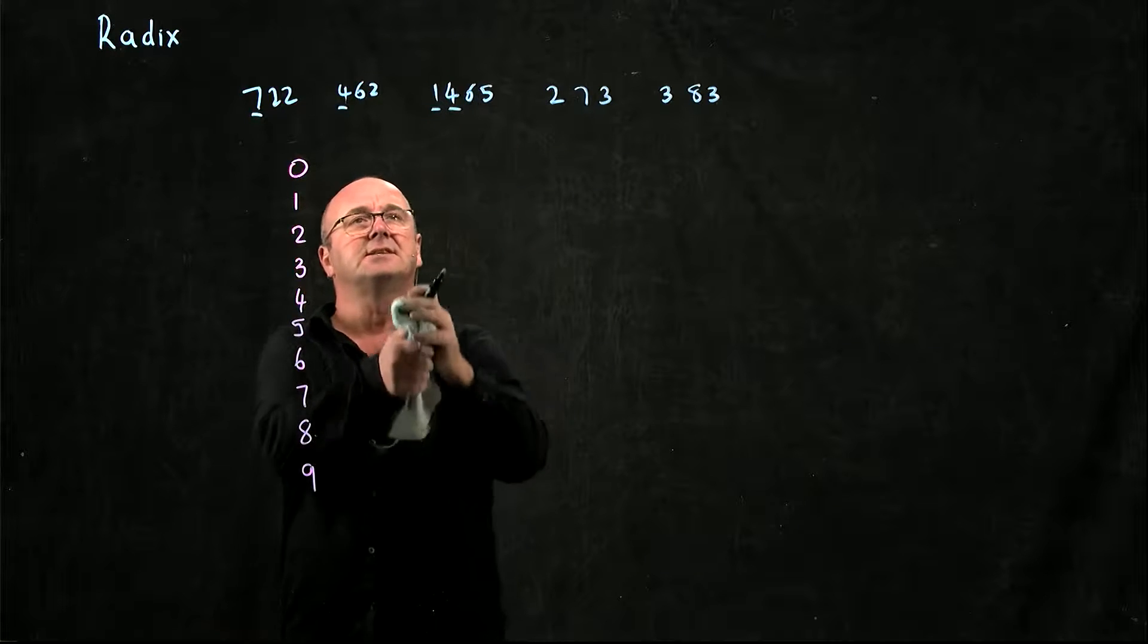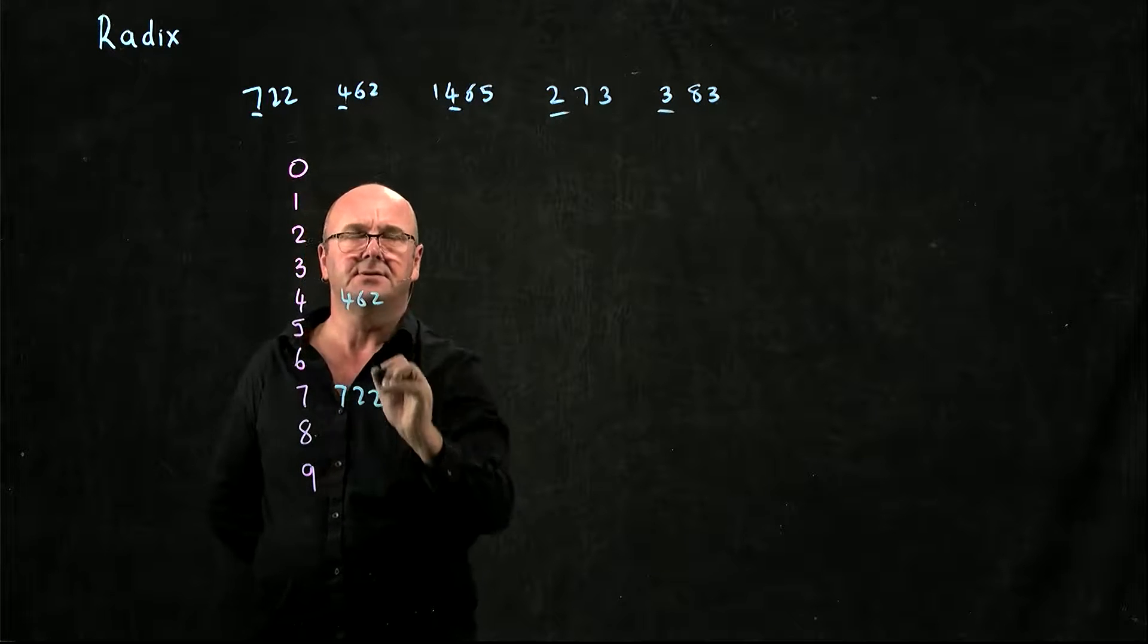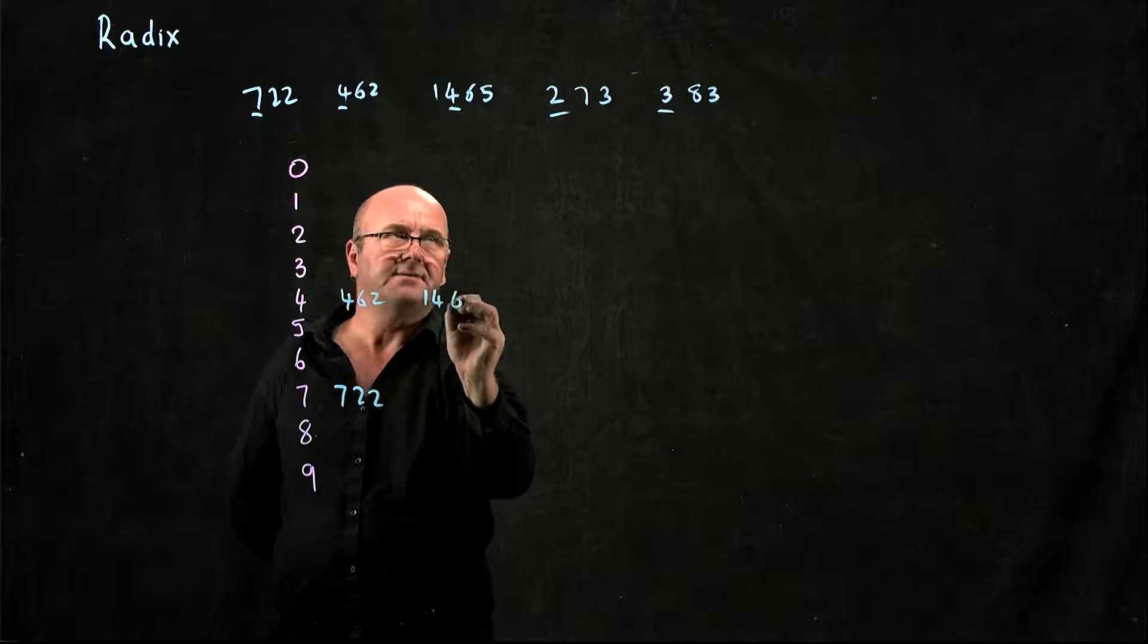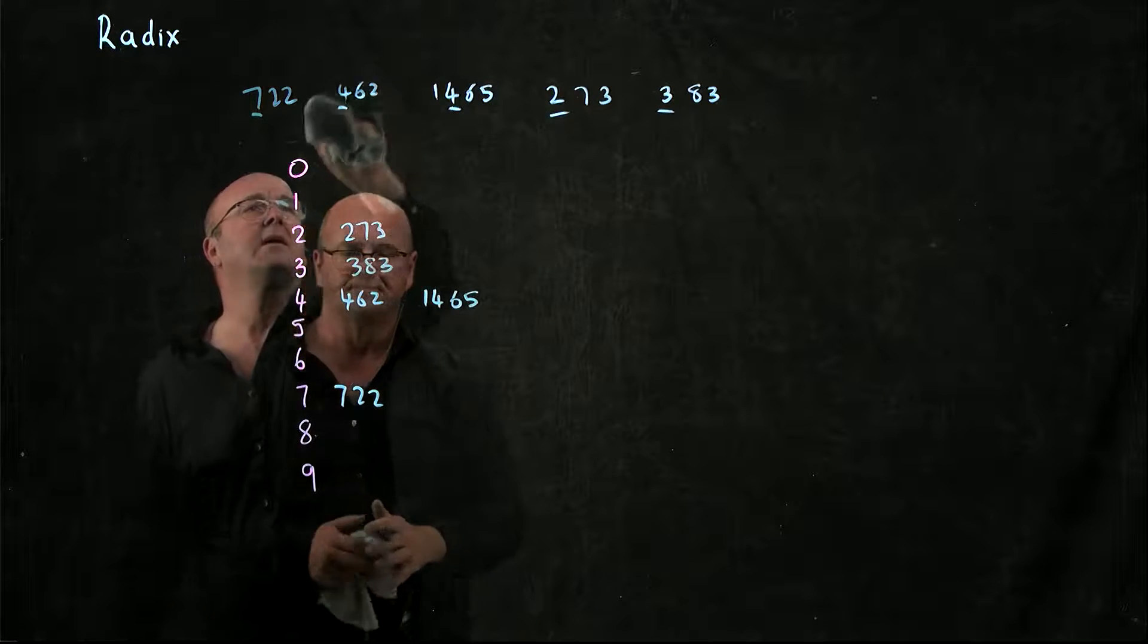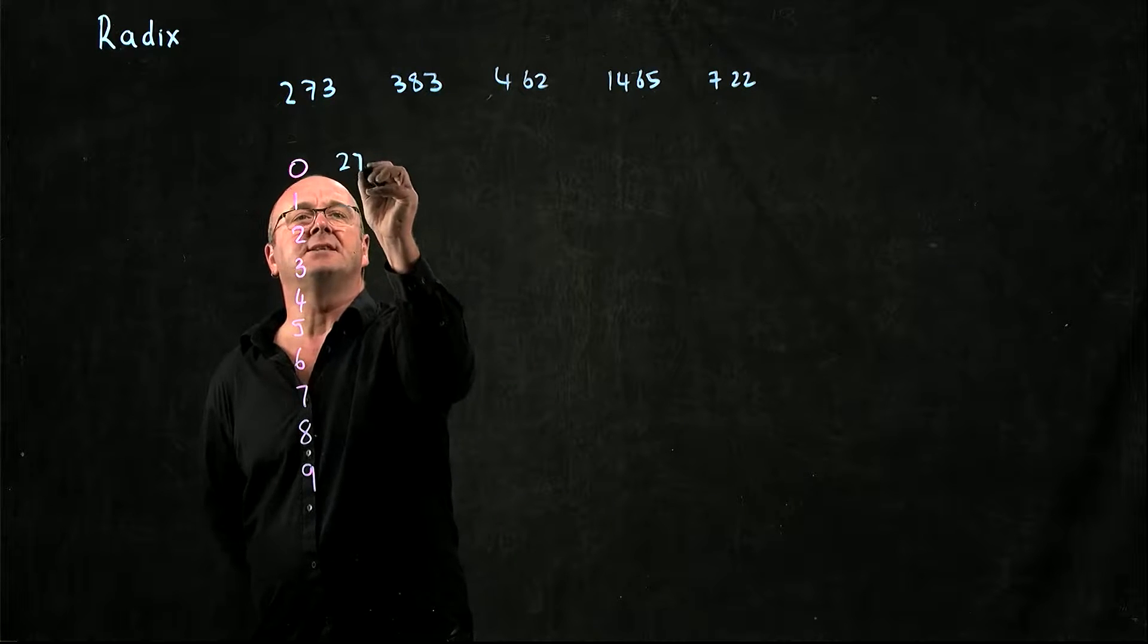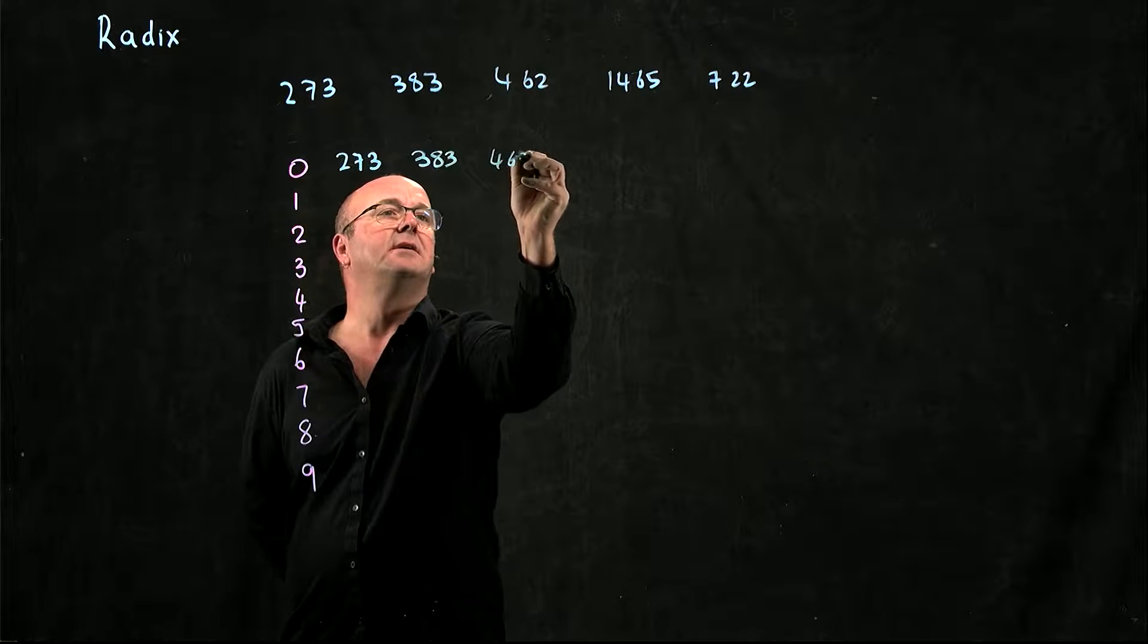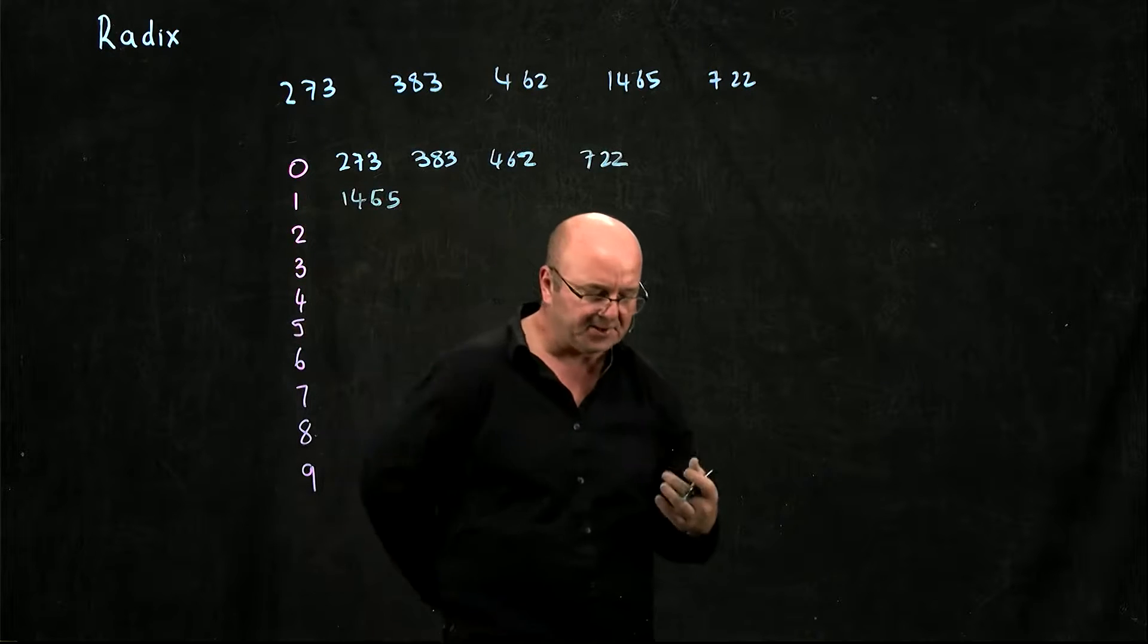Oops, that's not the hundreds, that's the thousands. So now I've got 722, 462, 1465, 273, and 383. And finally I've sorted it by the thousands bin. So none of these have thousands and so they end up where they are, and 1465. And you can see that I've sorted my list.